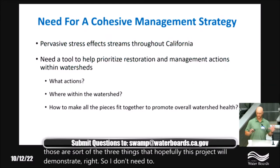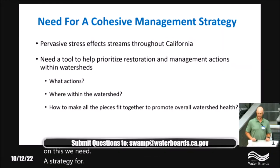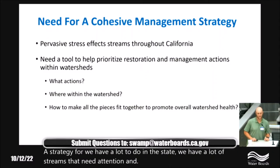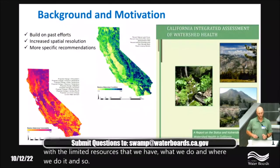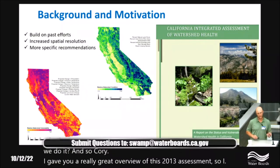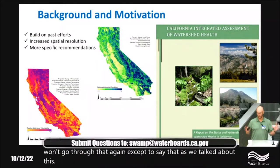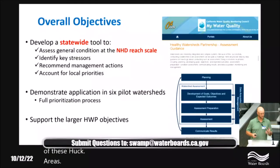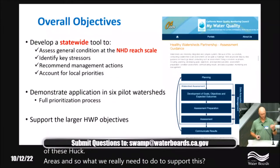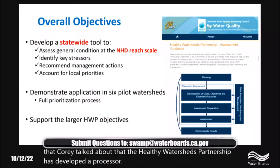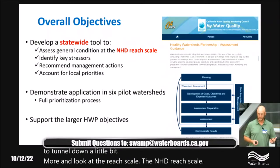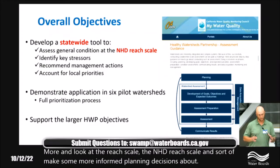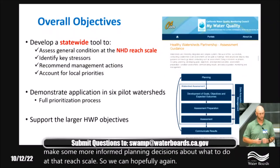We need a strategy. We have a lot of streams in the state that need attention, so how do we prioritize with limited resources what we do and where? Corey gave a great overview of the 2013 assessment, which was at a coarser scale — we looked at the HUC-12 scale. What we really need to support the Healthy Watersheds Partnership framework is a tool that lets us tunnel down to the NHD reach scale and make more informed planning decisions, so we can prioritize resources well and move toward Healthy Watersheds.